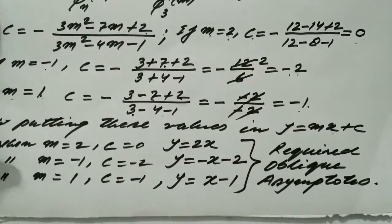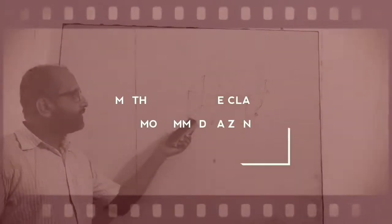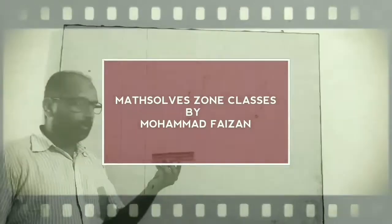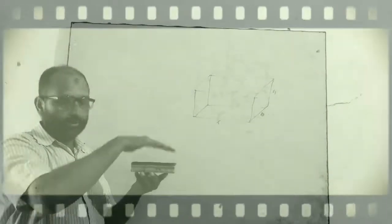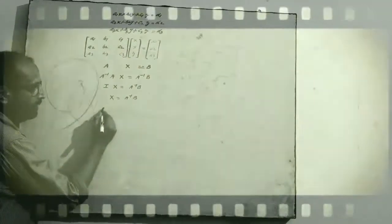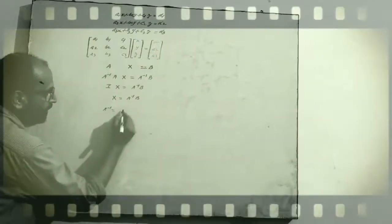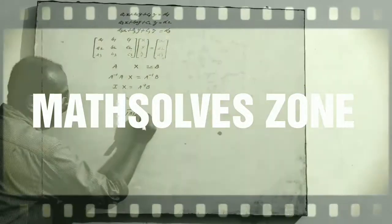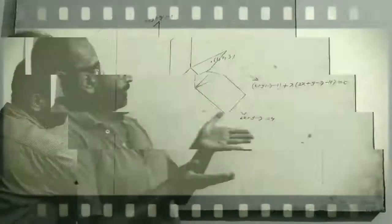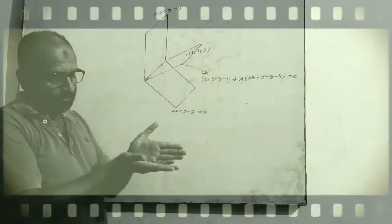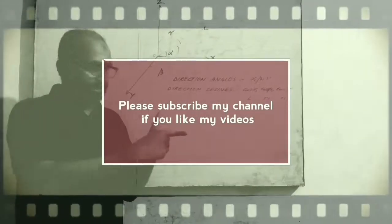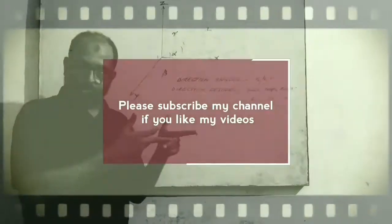So this is how we find oblique asymptotes of a given curve.